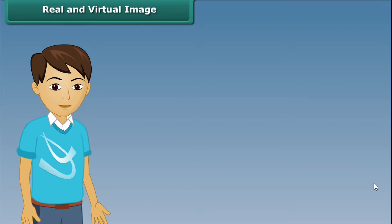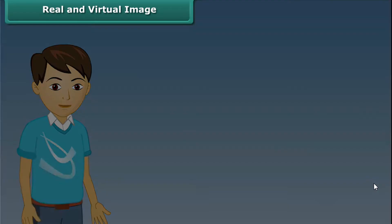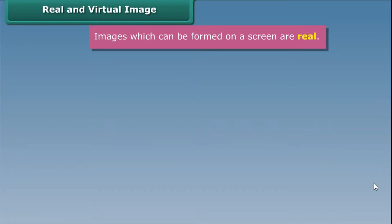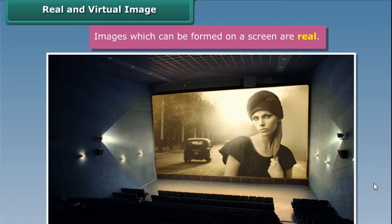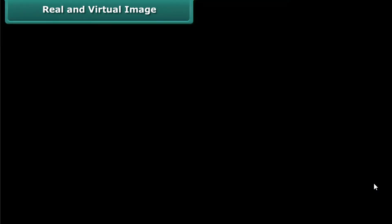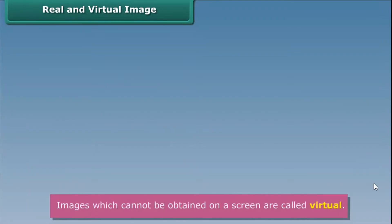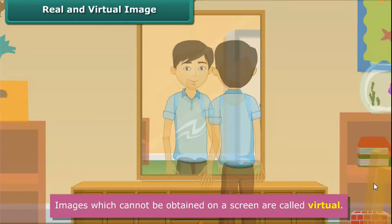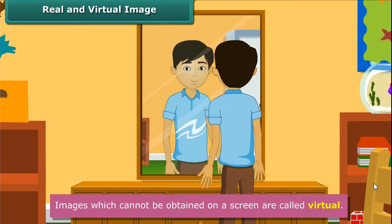Real and Virtual Images. Images which can be formed on a screen are real. For example, images formed on a cinema screen are real. Whereas images which cannot be obtained on a screen are called virtual. For example, the image of our face in a plane mirror is virtual.